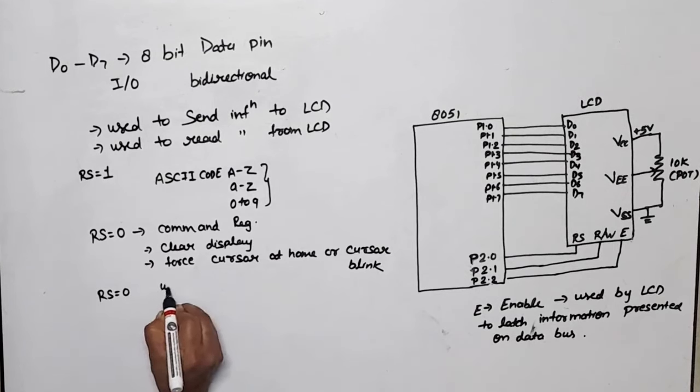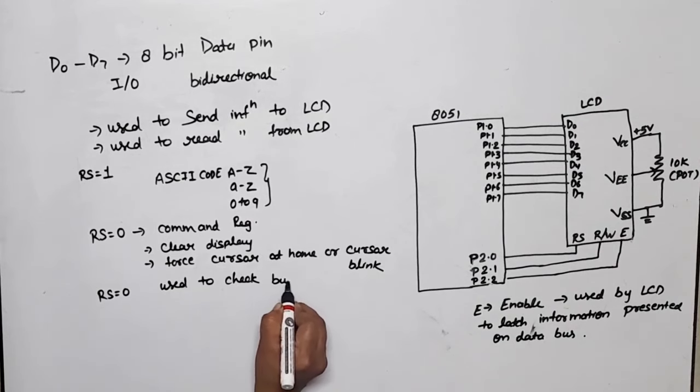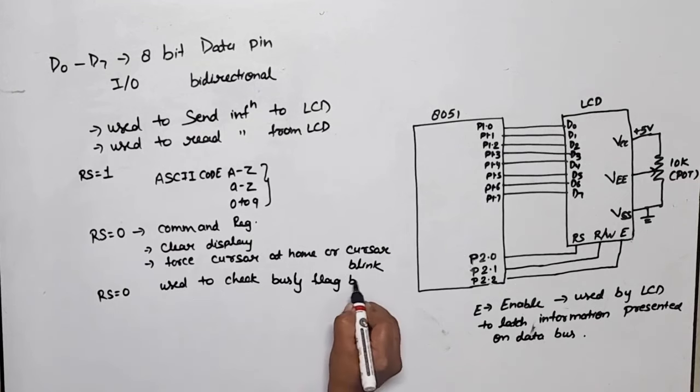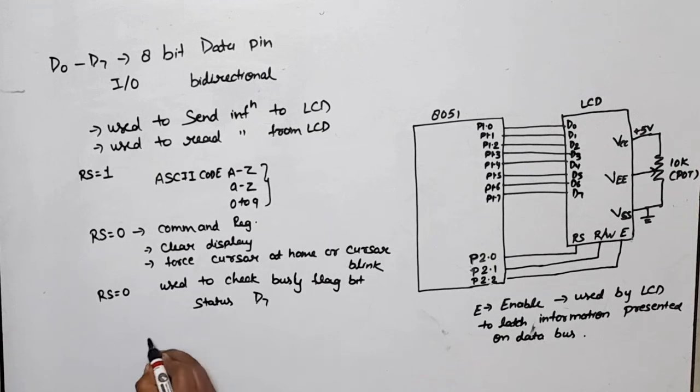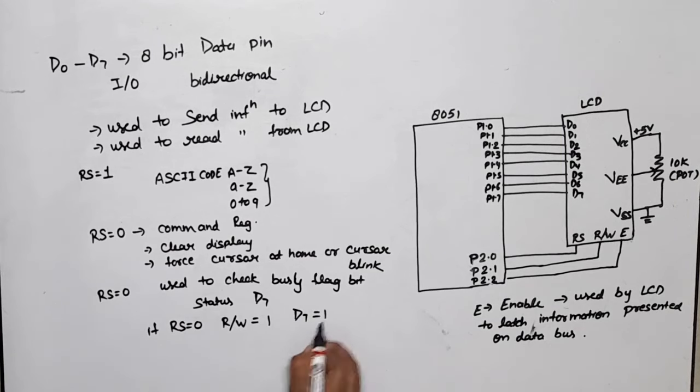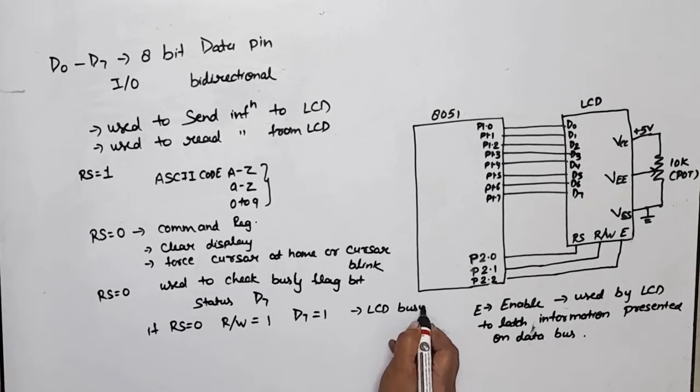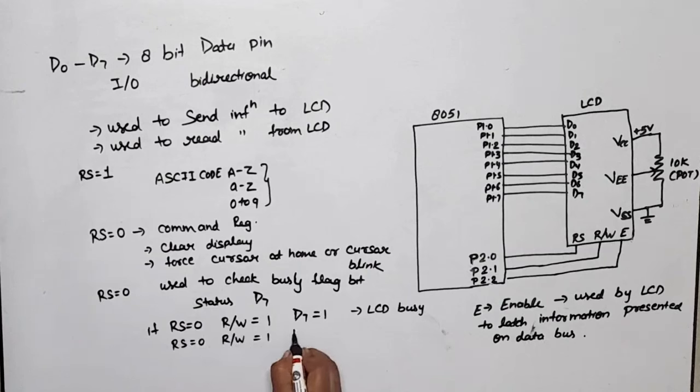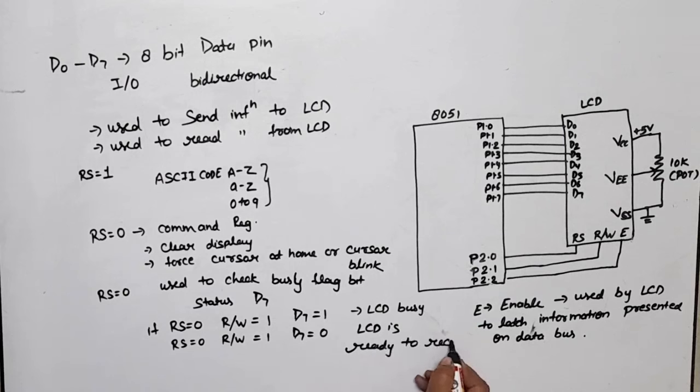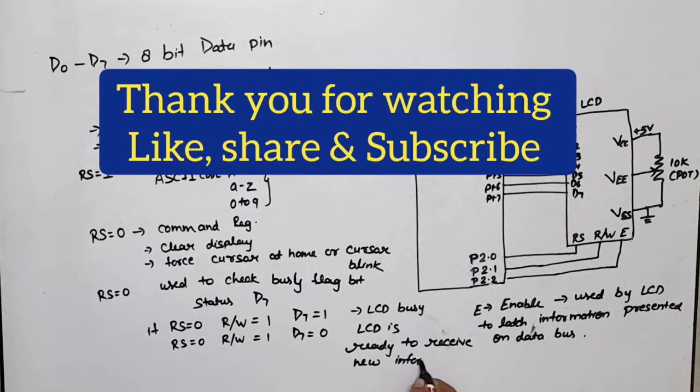One more operation: if RS equals 0, it can be used to check busy flag bit status, and that bit is D7. If RS equals 0 and we want to read D7 status, then R/W should equal 1. If D7 equals 1, it means LCD is busy in taking care of internal operations. This means LCD is busy and cannot receive any information. But if RS equals 0, R/W equals 1, and D7 equals 0, it means LCD is ready to receive new information or data. Thank you so much. If you have any doubt, please write down in the comment section. Thank you.